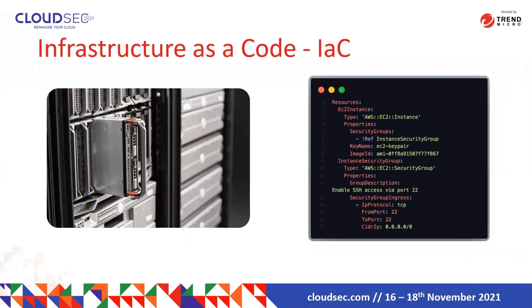So what is IAC? Infrastructure as code is a well-noted framework where most customers build a template or file that includes lots of their configurations in order to run a workload, server, or application inside the cloud. In the old days, in order to build a server, customers had to request it, build their operating system, then start building the application on top of it. This might take more than a month.